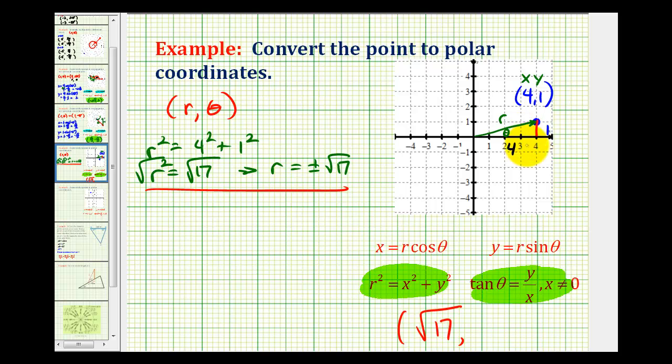Then to determine theta, we'll use a trig equation involving tangent, where tangent theta equals y divided by x, in this case 1 fourth. If we take the inverse tangent of both sides, on the left side we have theta, and on the right side we have inverse tangent of 1 fourth.